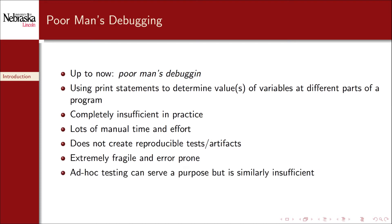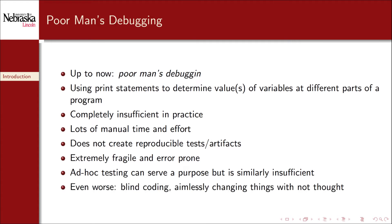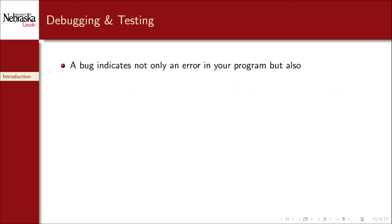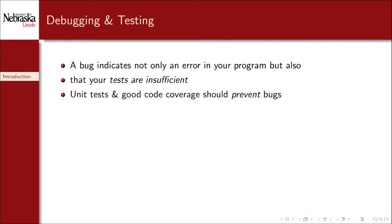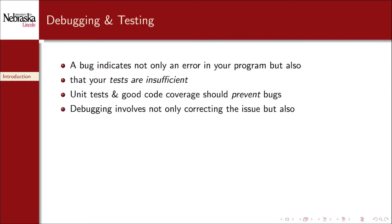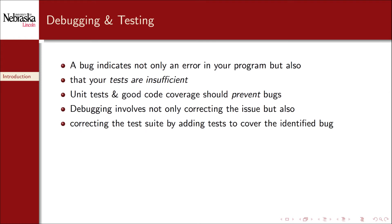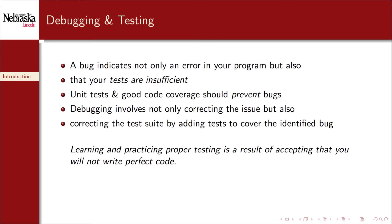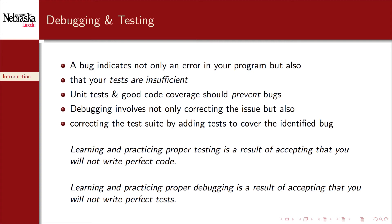Ad hoc testing can serve a purpose, but it's also insufficient. The worst approach, however, is if you just aimlessly try changing your code in the hopes that somehow it'll magically work. Really, debugging starts with proper testing. Identifying a bug indicates that not only does your program have an error, but also that your original tests were insufficient. Proper unit tests and good code coverage with your tests should have prevented the bugs in the first place, ideally making debugging unnecessary. Nevertheless, when bugs are found, debugging involves not only correcting the issue, but also correcting the test suite by adding a new test that will cover the identified bug. Learning and practicing proper testing is the result of accepting that you will not write perfect code. Learning and practicing proper debugging techniques is the result of accepting that you will not write perfect tests.